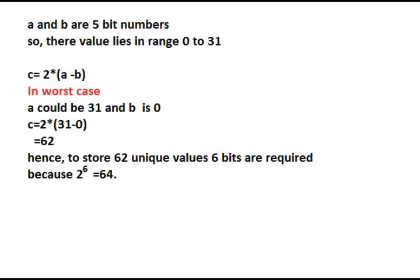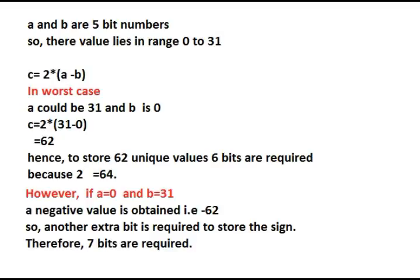That means we require 6 bits, since 2 to the power 6 is 64, which is close to 62. However, the reverse thing can also take place, that is a equals to 0 and b equals to 31. In that case, we will get -62. So in order to consider the negative sign, we need to have an extra bit. That is, 7 bits is the right answer.